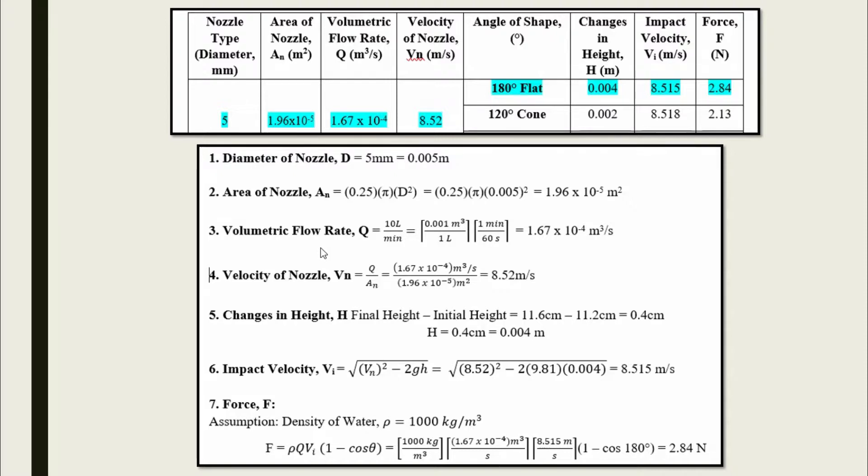In the third step, we have to convert the volumetric flow rate Q of 10 liters per minute to meter cubed per second. Next, the velocity of the nozzle Vn can be calculated by using the formula volumetric flow rate Q divided by area of nozzle An.